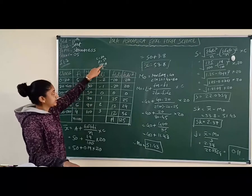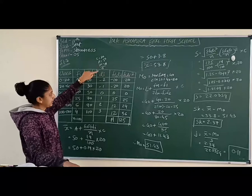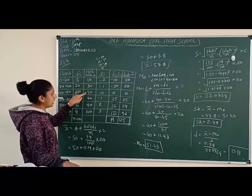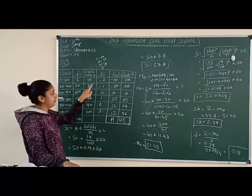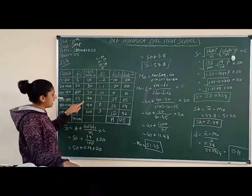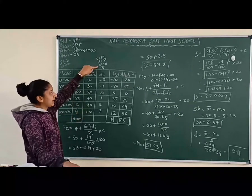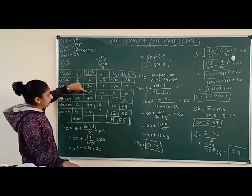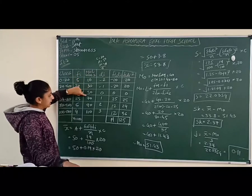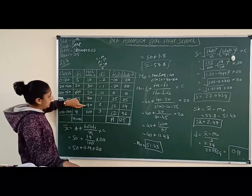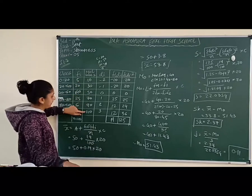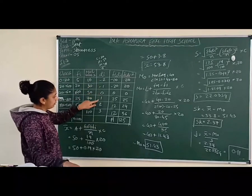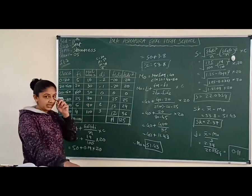Di = (x − a) / c. So for x = 10: (10 − 50)/20 = −2. Similarly for 30: (30−50)/20 = −1; for 50: 0; for 70: (70−50)/20 = 1; for 90: (90−50)/20 = 2; for 110: (110−50)/20 = 3. So the Di values are −2, −1, 0, 1, 2, 3.